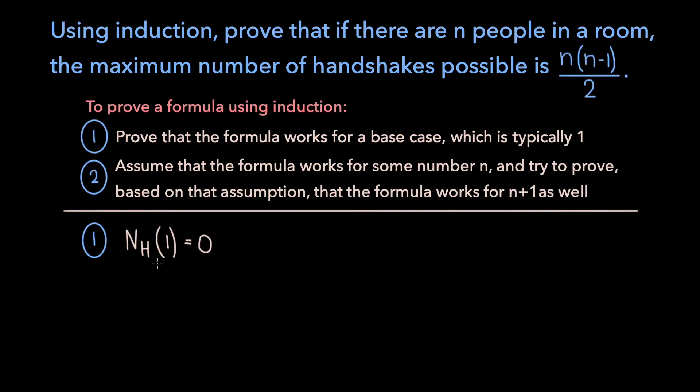And that's because the one person in the room has no one else to shake hands with. Now, when we use our formula to determine the maximum number of handshakes in the same scenario, we get 1 times 0 over 2, because once again, n is 1, and this is also 0. And so we've verified that our formula works for the base case.